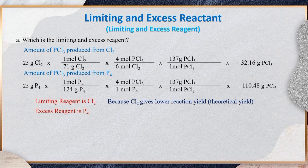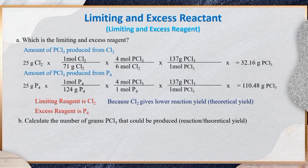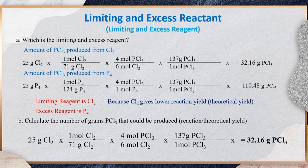Let's proceed to letter B: calculate the number of grams of PCl₃ that could be produced. The amount of product calculated from the complete reaction of the limiting reagent is called the reaction yield or theoretical yield. Since our limiting reagent is Cl₂, the theoretical yield is equal to 32.16 g of PCl₃.